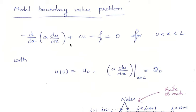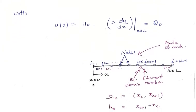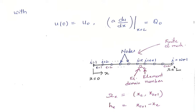This was the problem — a differential equation to be satisfied over a certain domain with some boundary conditions. To solve this, we first discretize the domain, representing it as a collection of elements. Our domain ranges from x equal to 0 to L, and we subdivide it into capital N number of elements. The circles shown are called nodes, marking the end nodes of each element.